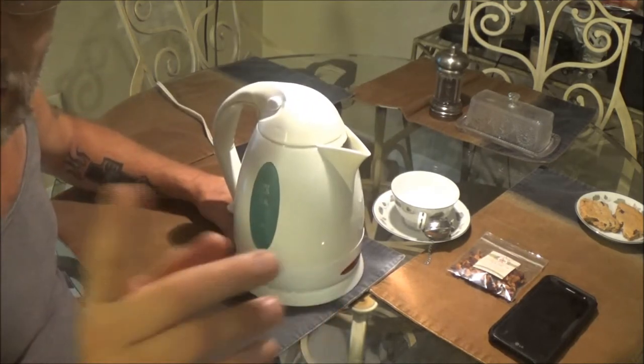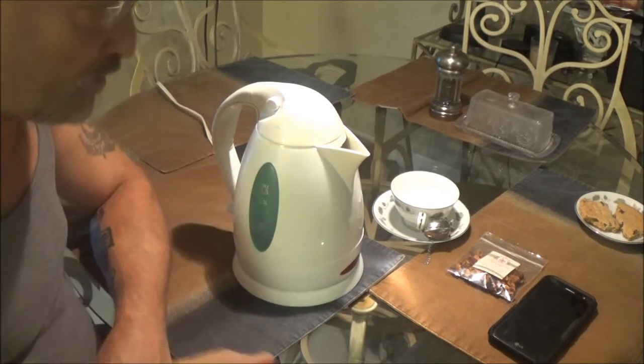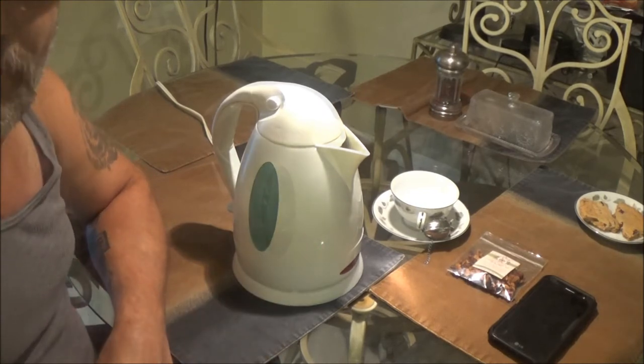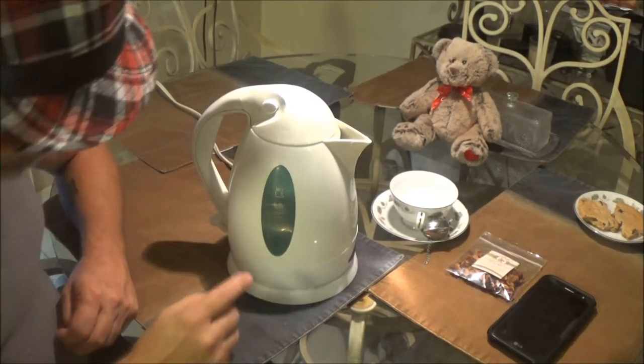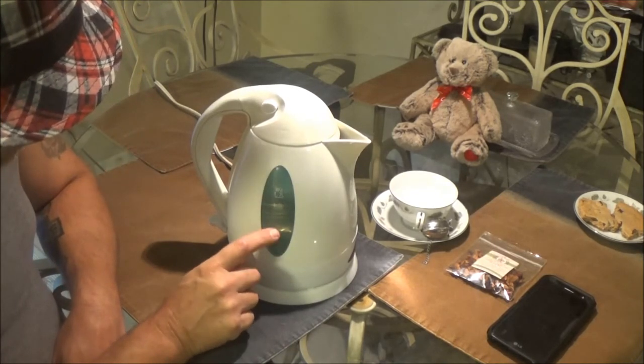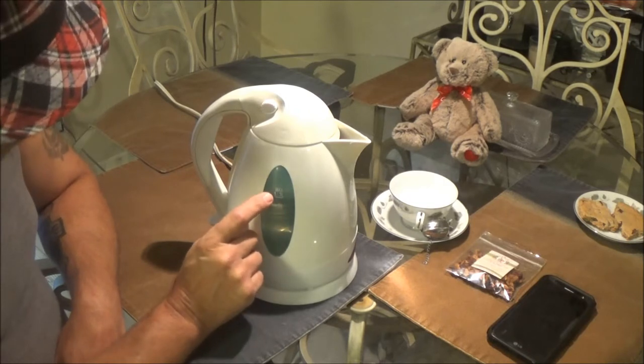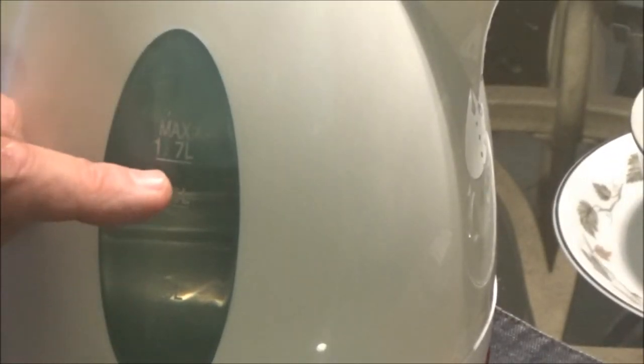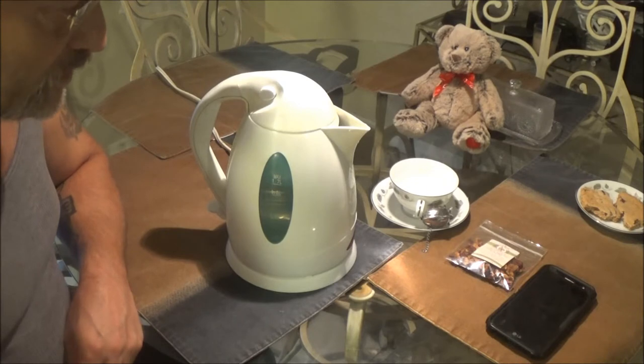We're going to show you how this works here in just a second. Right now I've got four minutes on this card, so let me change my card. We're going to put some water in this and then we'll get back at you. Okay, we're back. This has 0.5 liter, that's a half a liter. You've got one liter, you've got one and a half liter, and you've got 1.7 liters, that's max. And we are perfectly on the line right there.